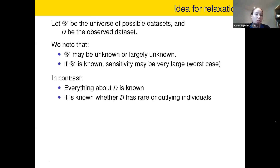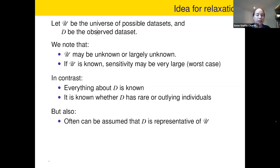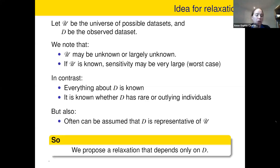On the other hand, D is known — you'll know what D looks like. And it seems like it would make sense to be able to use D when you think about privacy for the data set you're analyzing. Usually we assume that D is representative of that sort of universe. We have in mind here some sort of samples: you've been doing a sample survey, and that data set is representative of some sort of population of possible data sets. What we looked at is how can we have some sort of differential privacy guarantees that depend only on D.